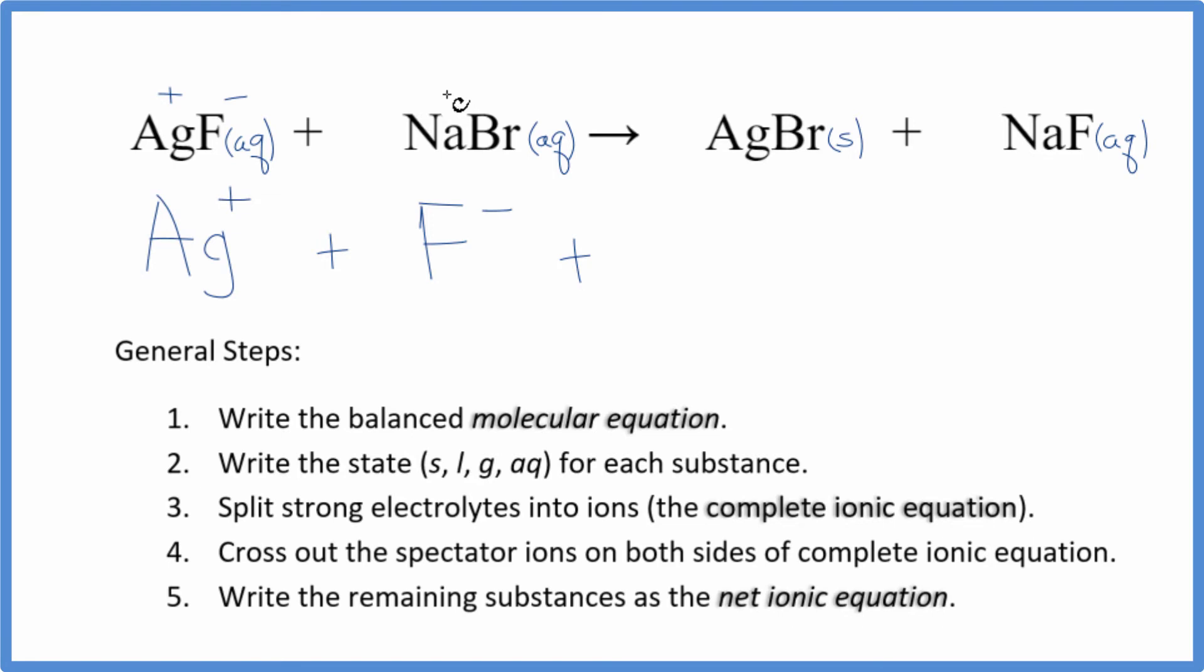And then sodium, group 1 on the periodic table, 1+ bromide ion, 1-. So Na+, plus the bromide ion, Br-. And these are the reactants in our net ionic equation.